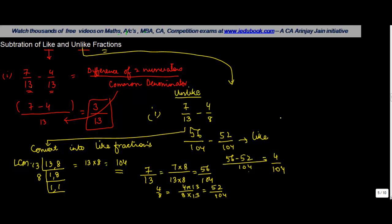The second method to do this is again, let's do it in a different color. So what you can do here is 7 upon 13 minus 4 upon 8. In the second method, the denominator is going to be the common denominator, which is the LCM. So you get 104 here.